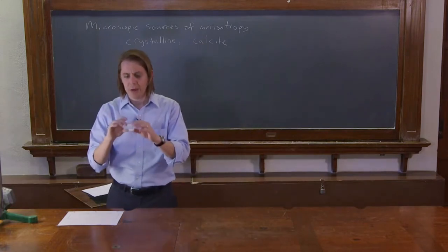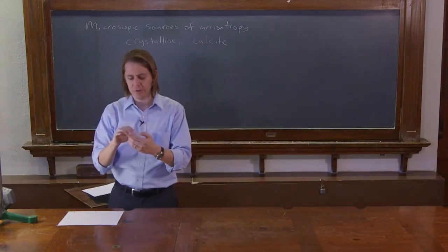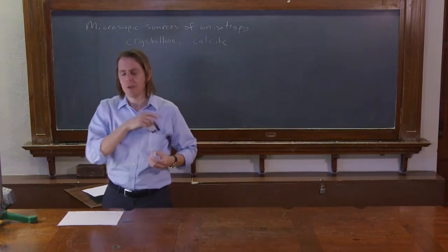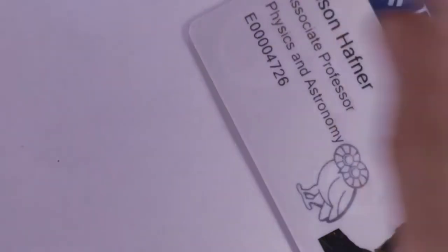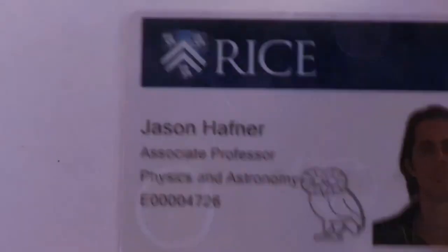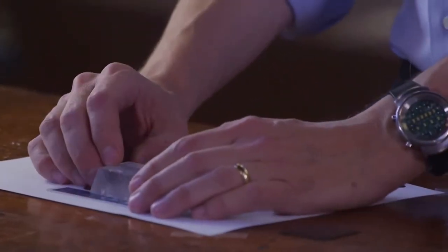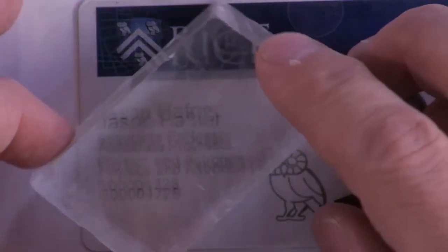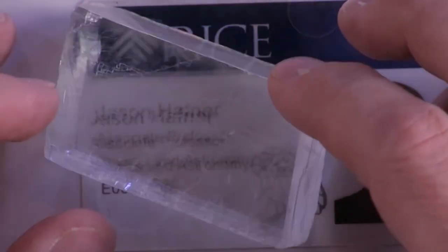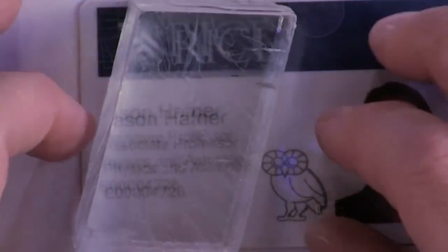So calcite is very interesting because it does this. 17th century Erasmus Bartholinus was studying calcite. He was basically taking his, probably his university ID and his big crystal of calcite and laid it on top. And when you look through it, you see double. And you don't just see double. When you turn it, the extra image you see moves around.